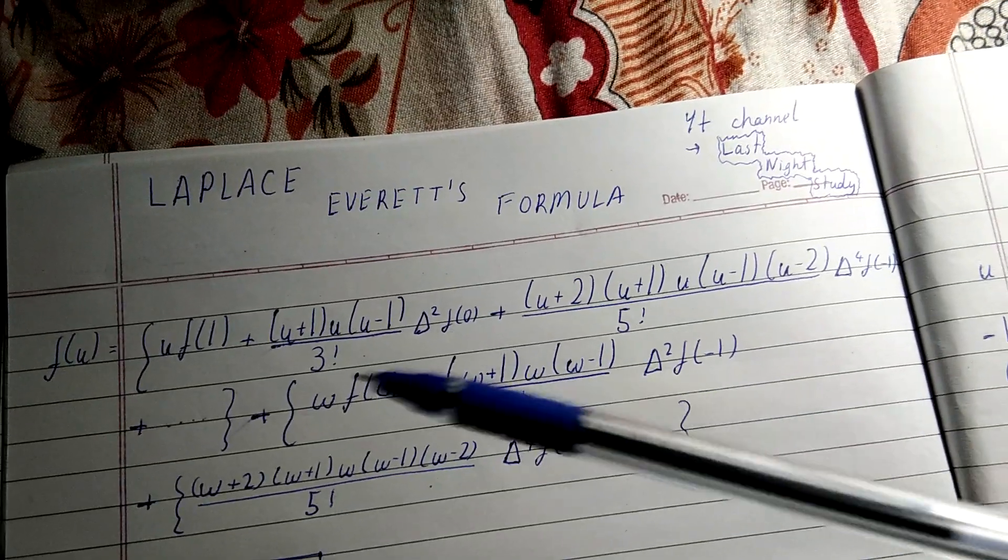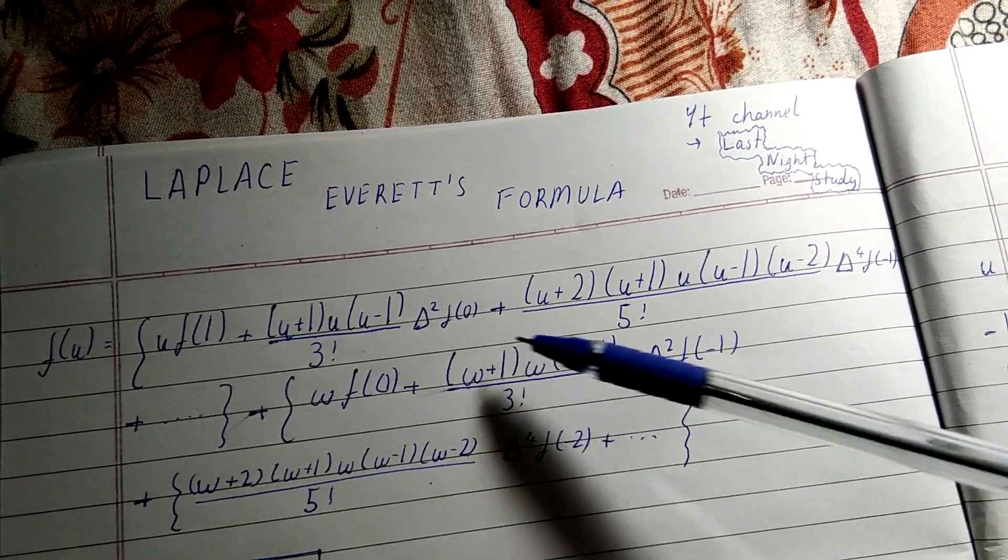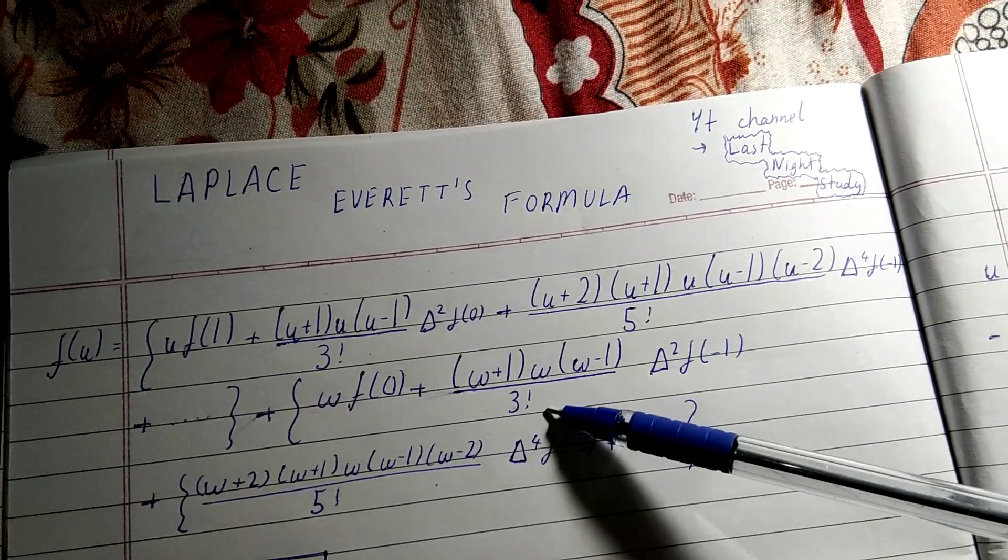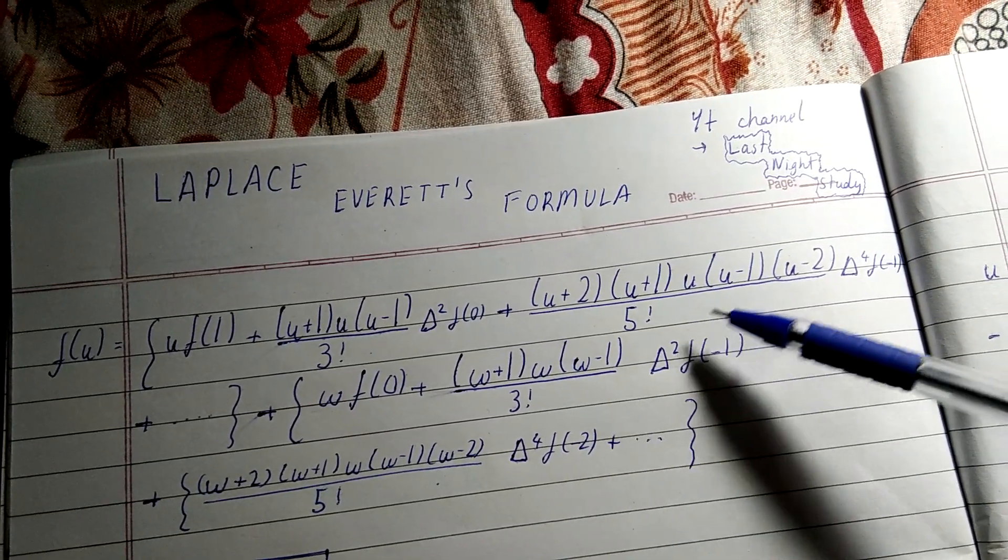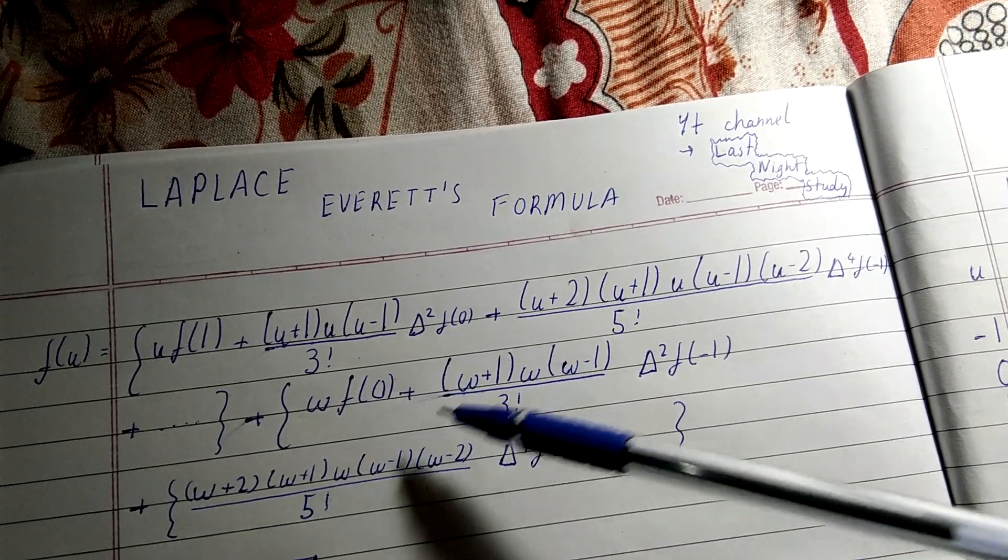...+ [(w+2)(w+1)·w·(w-1)(w-2)]/5!·Δ⁴f(-2) + and so on. So w is a confusion over here.